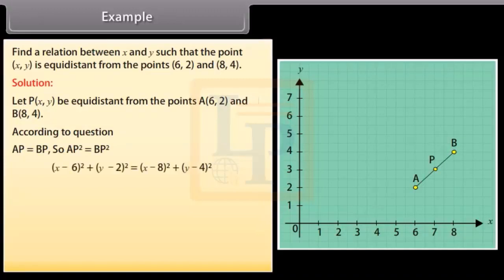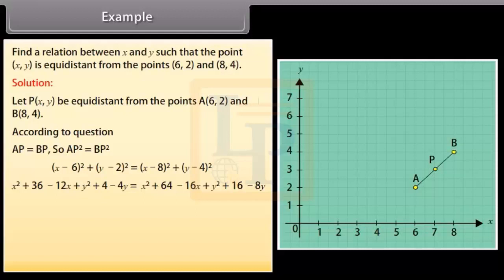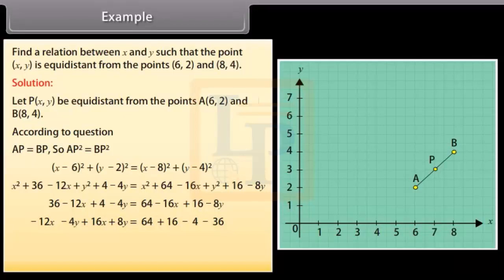X minus 6 whole square plus Y minus 2 whole square equals X minus 8 whole square plus Y minus 4 whole square. By calculating it we get X square plus 36 minus 12X plus Y square plus 4 minus 4Y equals X square plus 64 minus 16X plus Y square plus 16 minus 8Y, which is equal to 36 minus 12X plus 4 minus 4Y equals 64 minus 16X plus 16 minus 8Y, which becomes minus 12X minus 4Y plus 16X plus 8Y which equals 64 plus 16 minus 4 minus 36, equal to 4X plus 4Y is equal to 40, which is equal to X plus Y which equals 10.